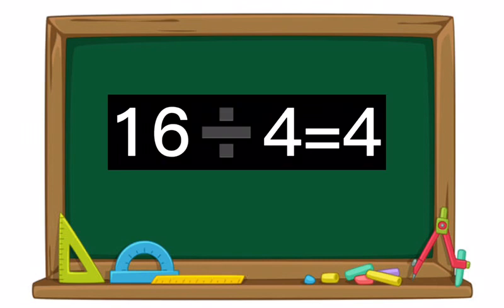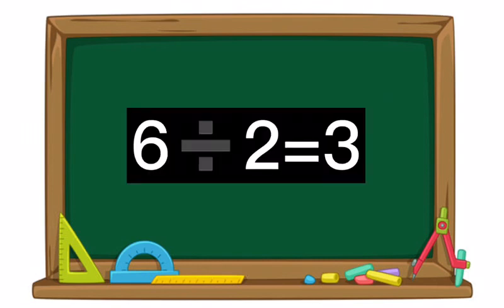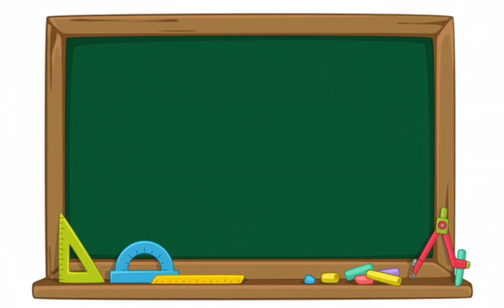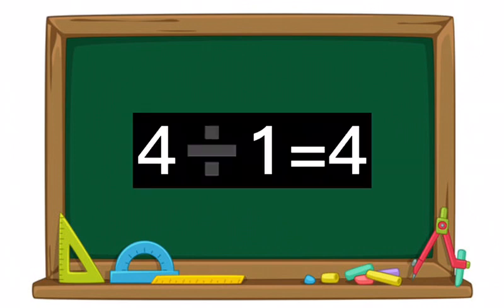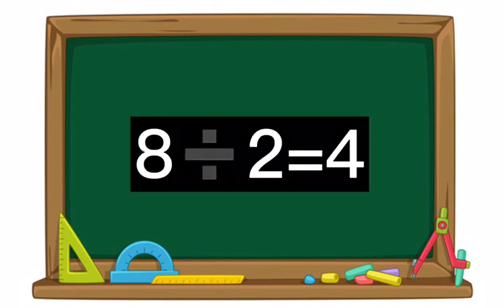Twenty divided by four equals five. Sixteen divided by four equals four. Six divided by two equals three. Four divided by one equals four. Eight divided by two equals four.